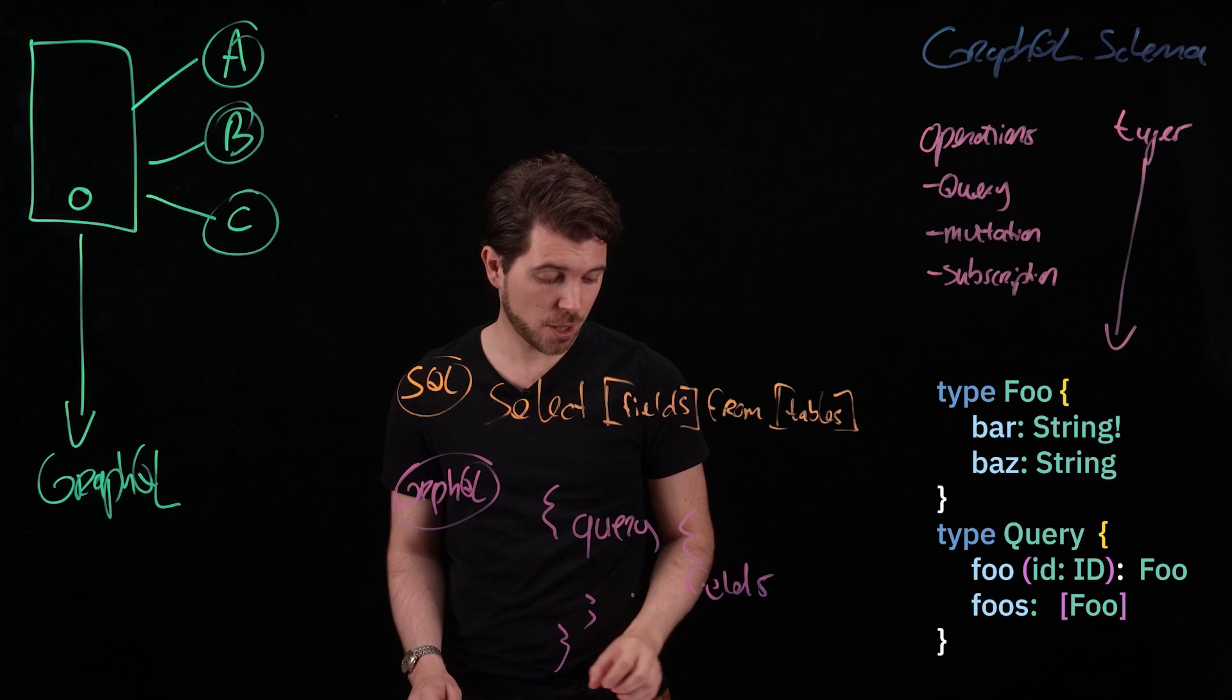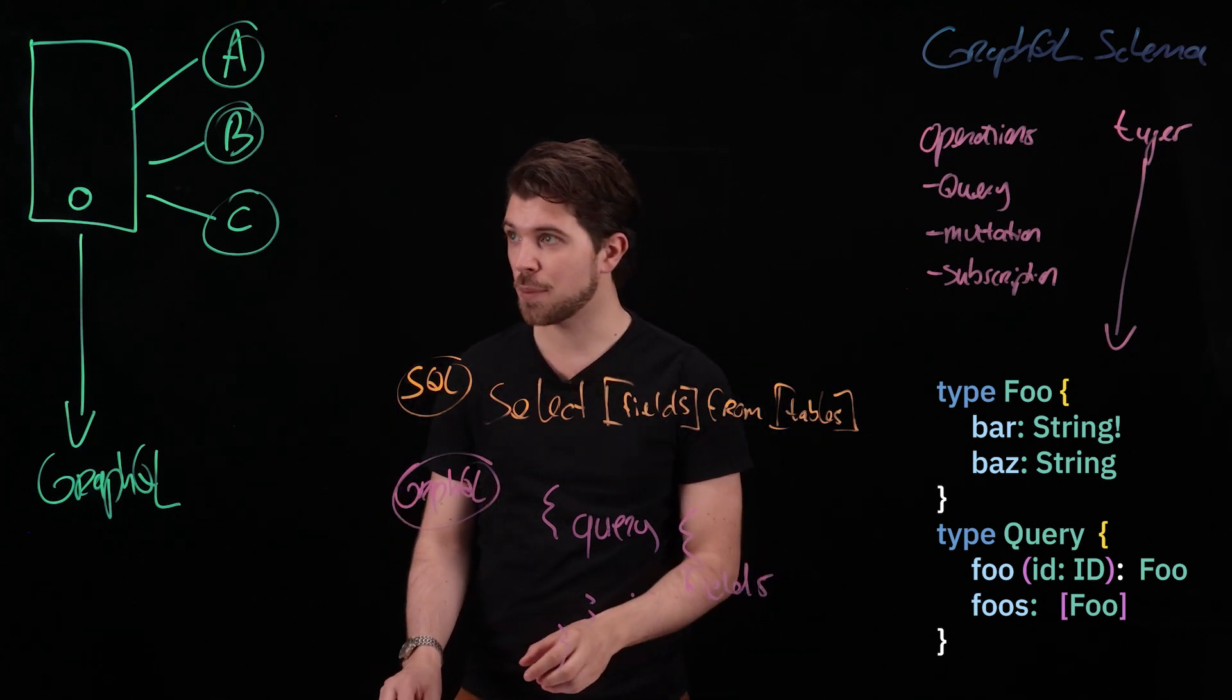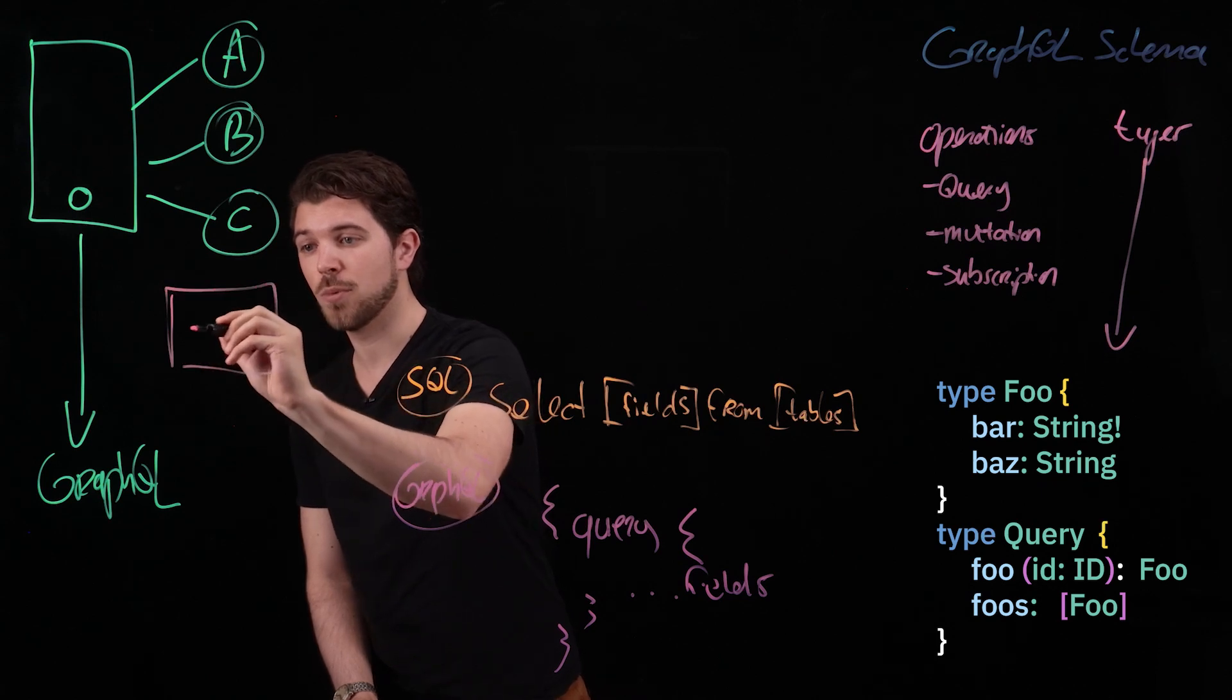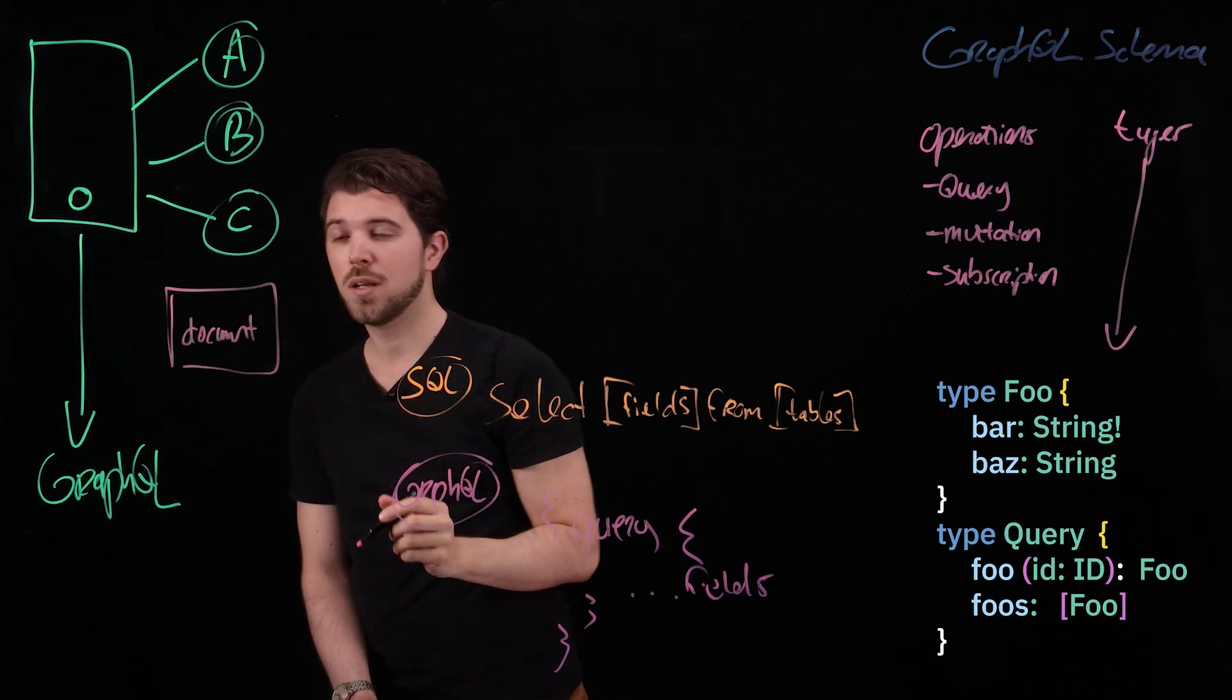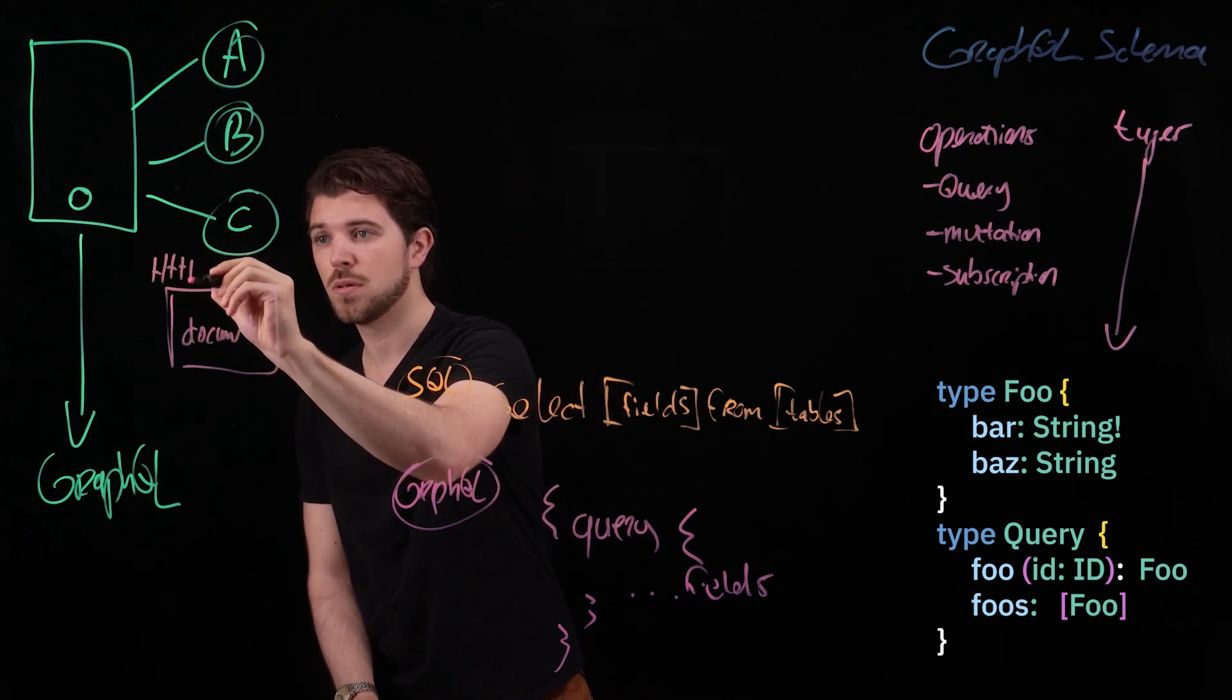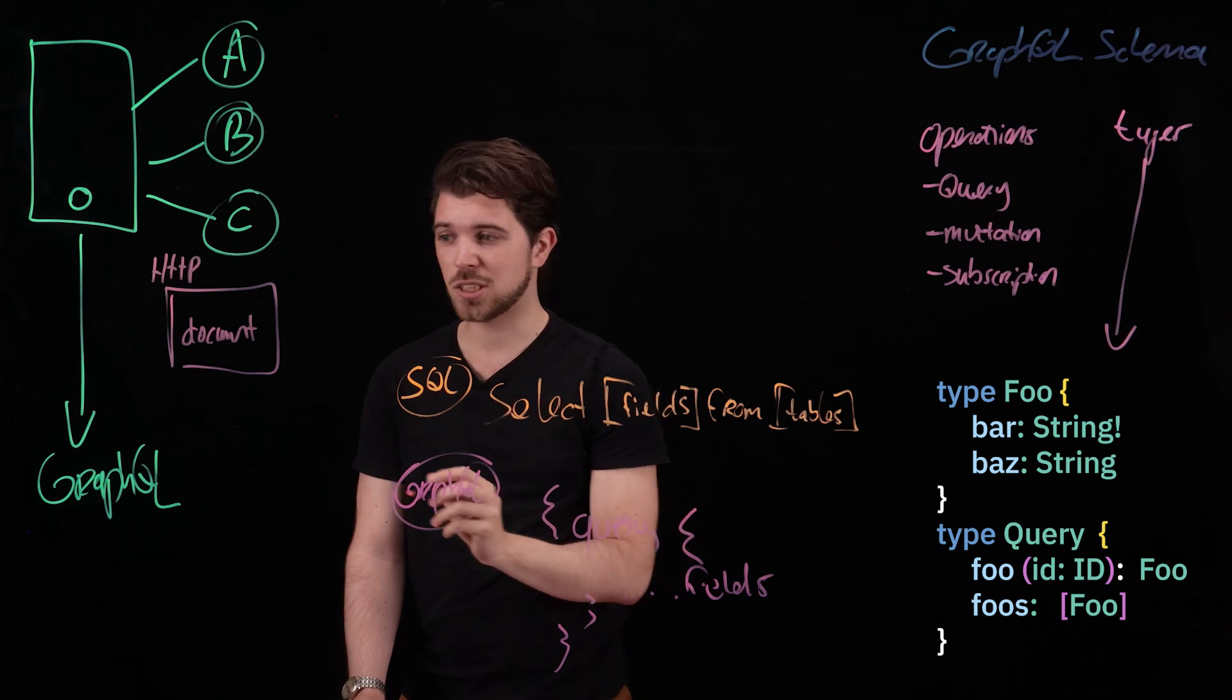In order to get the data from the GraphQL API, you would need to take your statement and pass it to the GraphQL API in a document. This data is usually passed over HTTP and returns data in a JSON format.